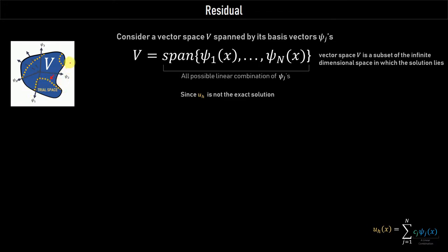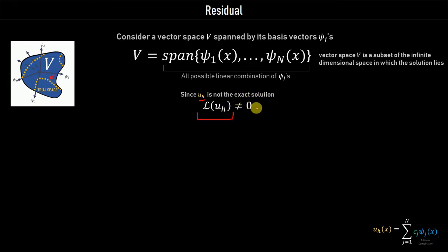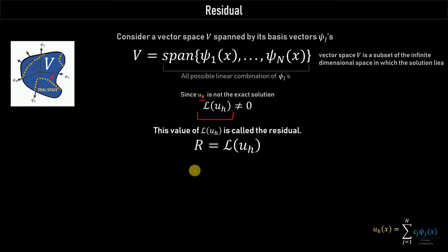This yellow dotted part of the solution — UH — is the projection we want to solve for, and it is not an exact solution. So if we put the value of UH into the PDE, where L represents a linear PDE operator, we won't get zero. What we get out of the differential equation when we substitute the approximate solution UH is called the residual. This approximate solution is nothing but a linear combination of the ψⱼ's, which are the basis functions of the trial space.